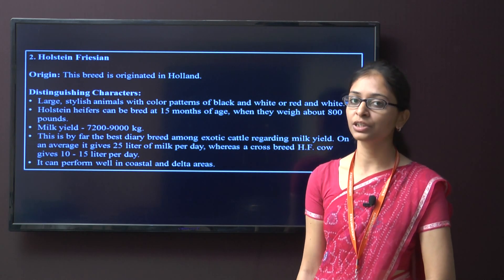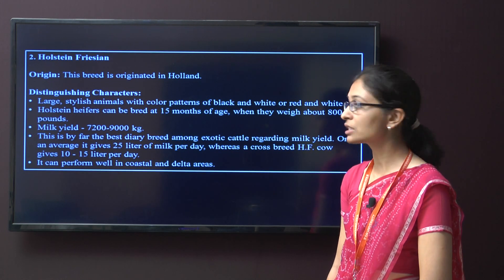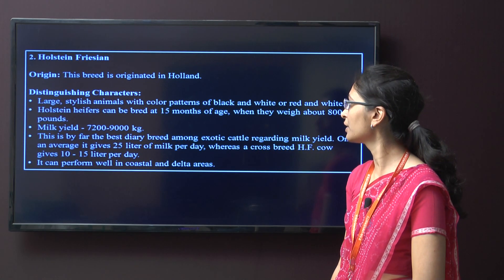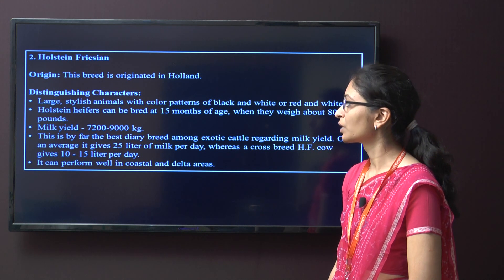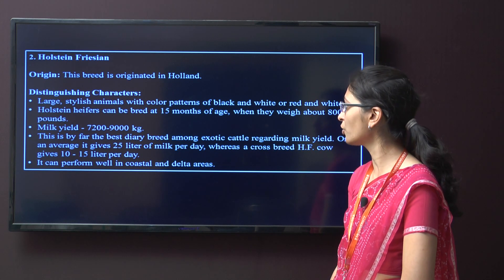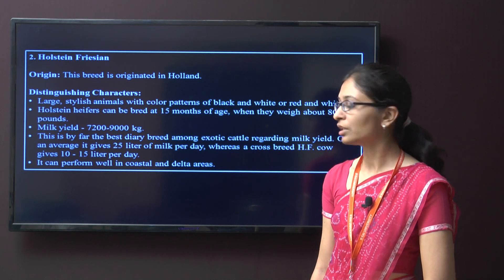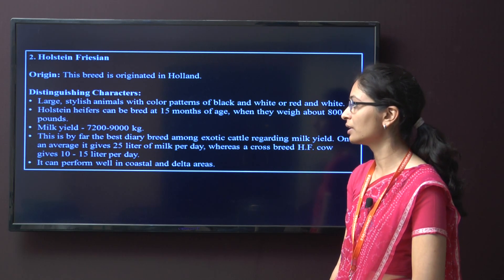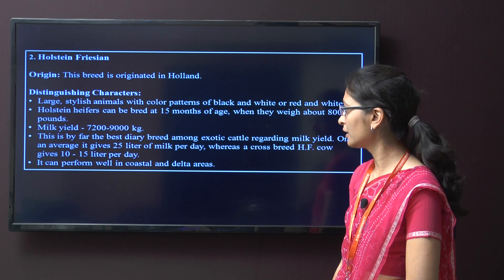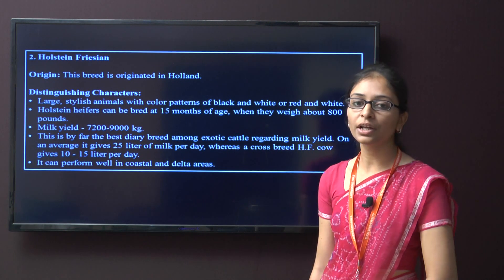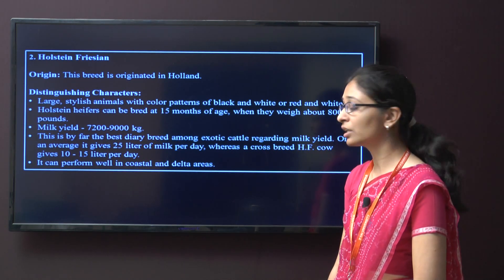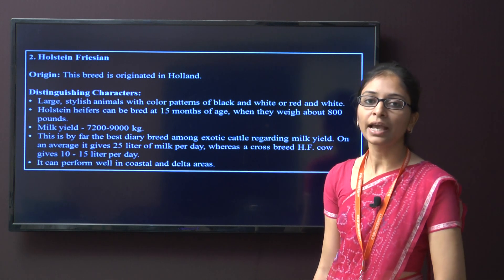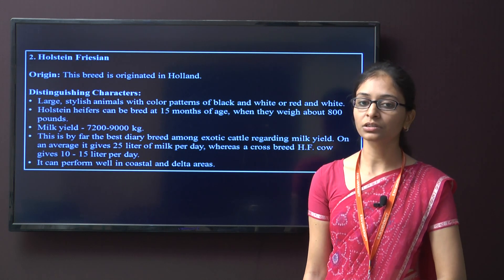The second exotic cattle breed is Holstein Friesian. The origin is Holland. They are large, stylish animals with a colour pattern of black and white or red and white. Holstein Friesians can be bred at 15 months of age when they weigh about 800 pounds. The milk yield is around 7200 to 9000 kg, making it by far the best dairy cattle among exotic breeds, averaging around 25 litres per day. However, crossbreds of this breed will give only 10 to 15 litres per day. This breed performs well in coastal and delta areas.